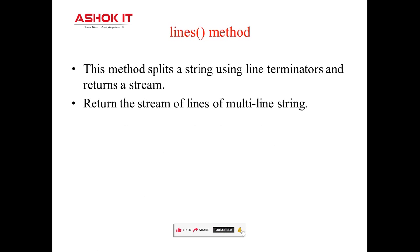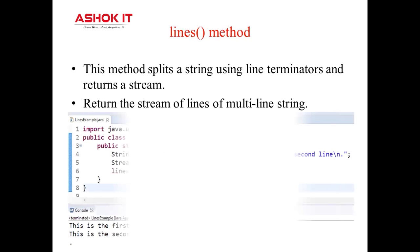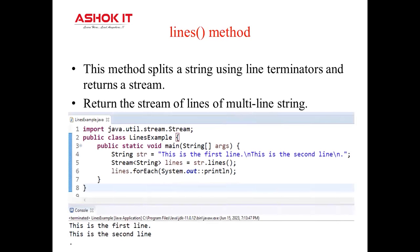The second new string method is lines. This lines method in the string class returns a stream of lines extracted from a given string. It returns a sequential ordered stream, meaning lines will appear in the order they occur. This method works based on the newline character (\n) or carriage return (\r), and extracts lines based on the newline character or the combination of carriage return followed by newline.